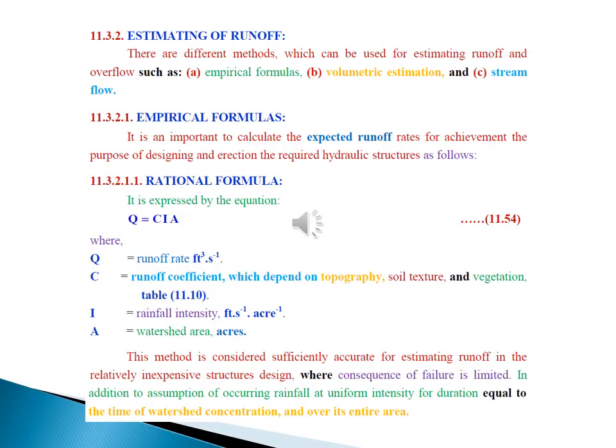Estimation of runoff. Really, there are different methods which can be used for estimating runoff and overflow such as empirical field measurements, volumetric estimation, and stream flow. Number one, empirical field measurement. Really, it is important to calculate the expected runoff discharge for achieving the purpose of designing and directing the required hydraulic structure, as shown in the enclosed equations and table. This method is considered sufficiently accurate for estimating runoff in relatively inexpensive structure design.